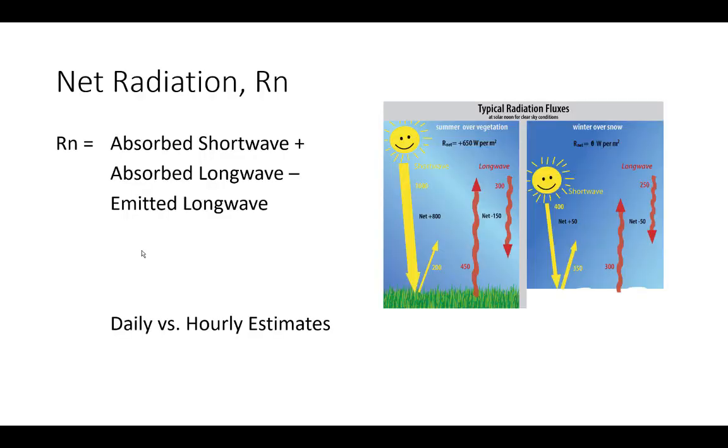Just a quick reminder what net radiation is. We've covered this on a daily time step, but now we're going to talk about hourly estimates. It's the absorbed shortwave plus the absorbed longwave minus the emitted longwave. It's a function of solar radiation, temperature, emissivity of the sky, all those types of things. In the previous examples, we did this on a daily basis, which is fine if you want to estimate evapotranspiration on a daily basis, but what if you want to use hourly data inputs? That's what we're going to learn today.